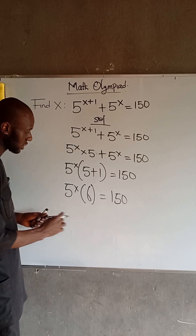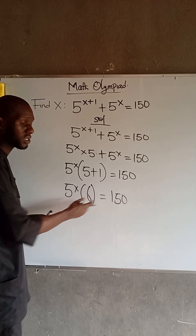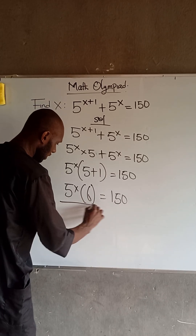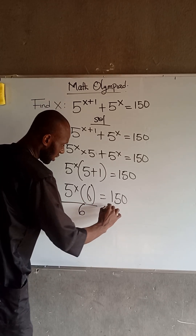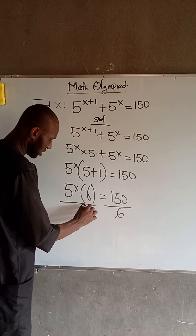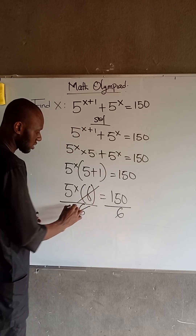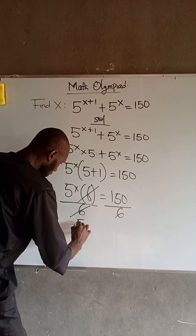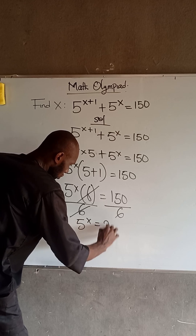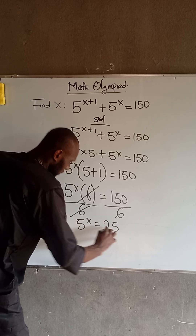At this point, we can divide both sides by 6. Dividing both sides by 6, we have that 5 to the power of x is equal to 25.